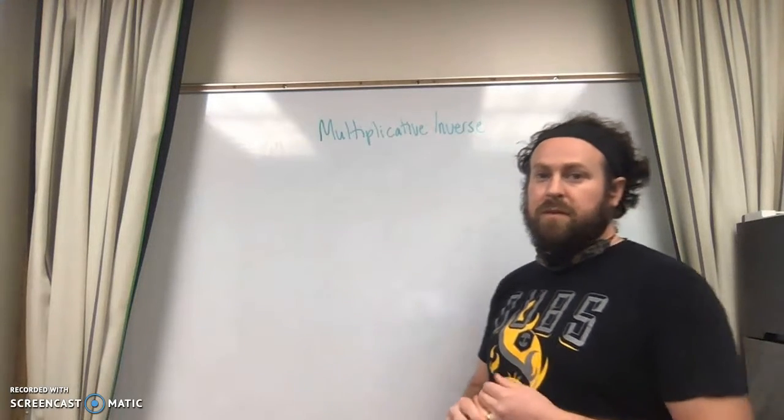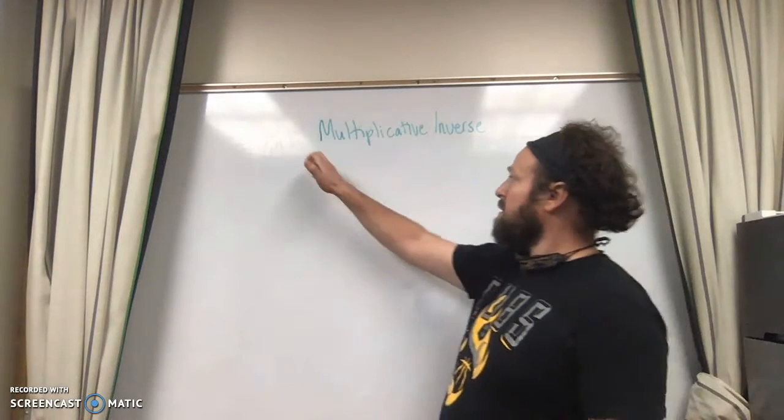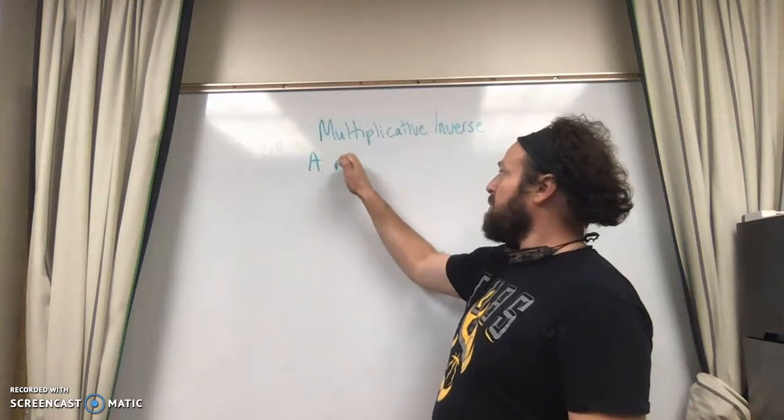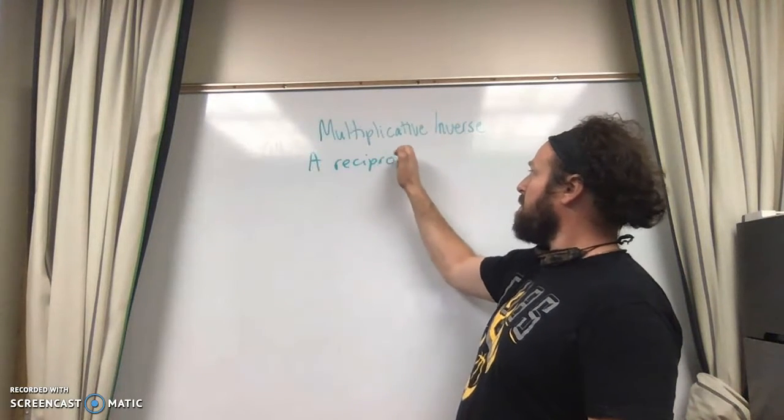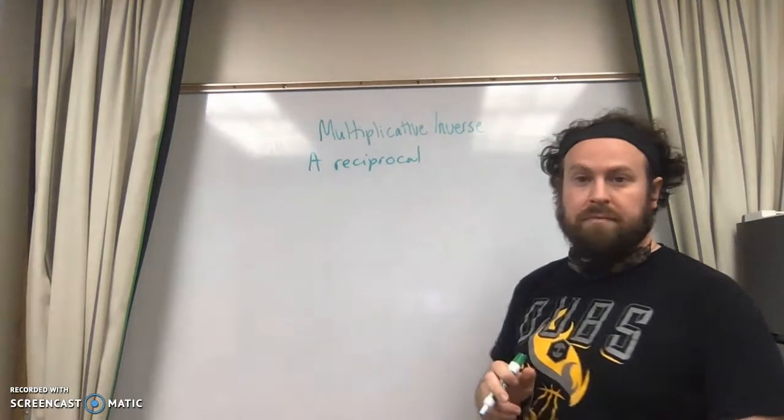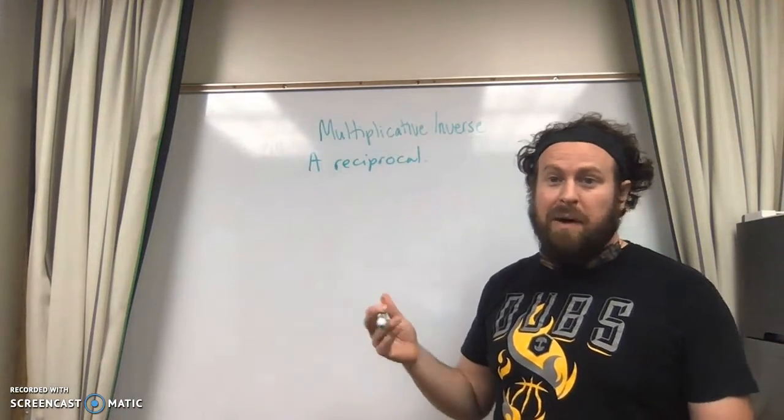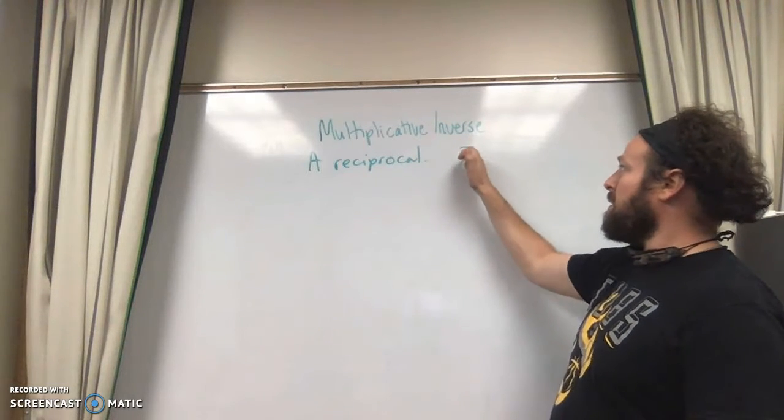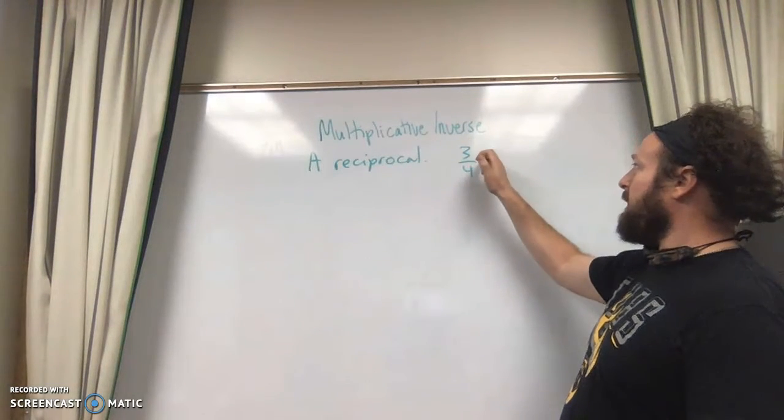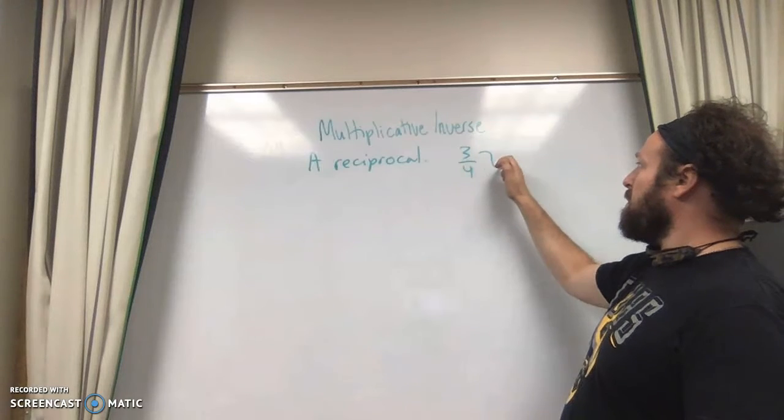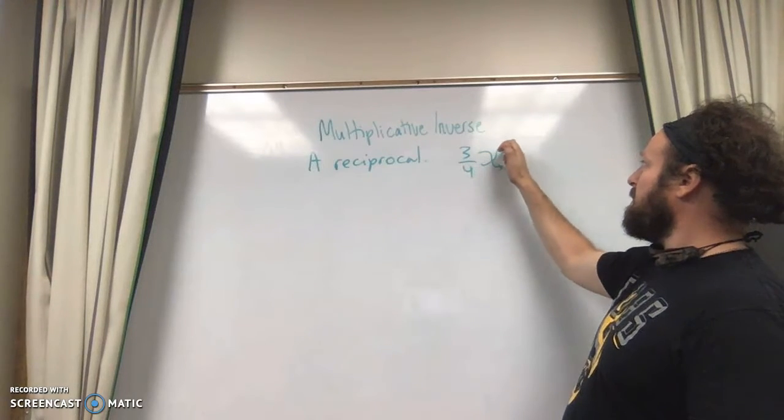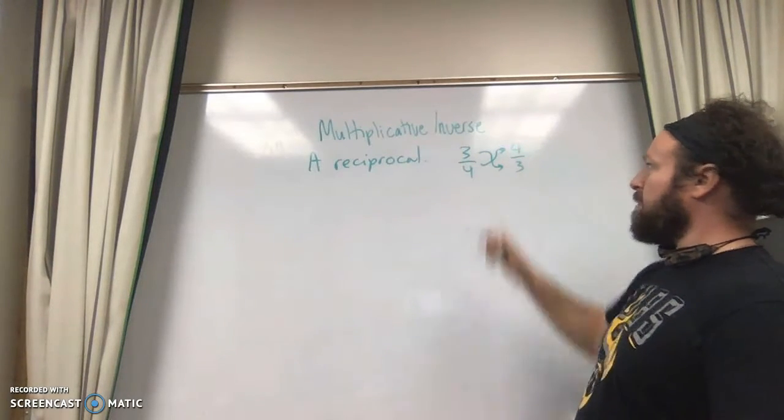First, the definition. Multiplicative inverse is a reciprocal. That's it. A reminder about reciprocals: it's when we take any number, like 3 over 4, and we rotate it, and it becomes something like 4 over 3.